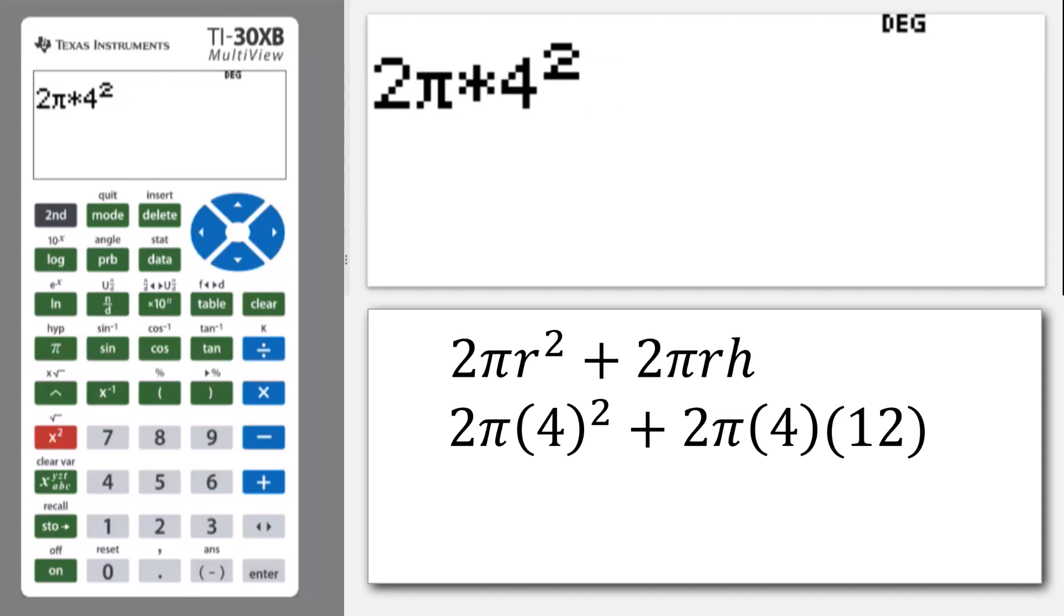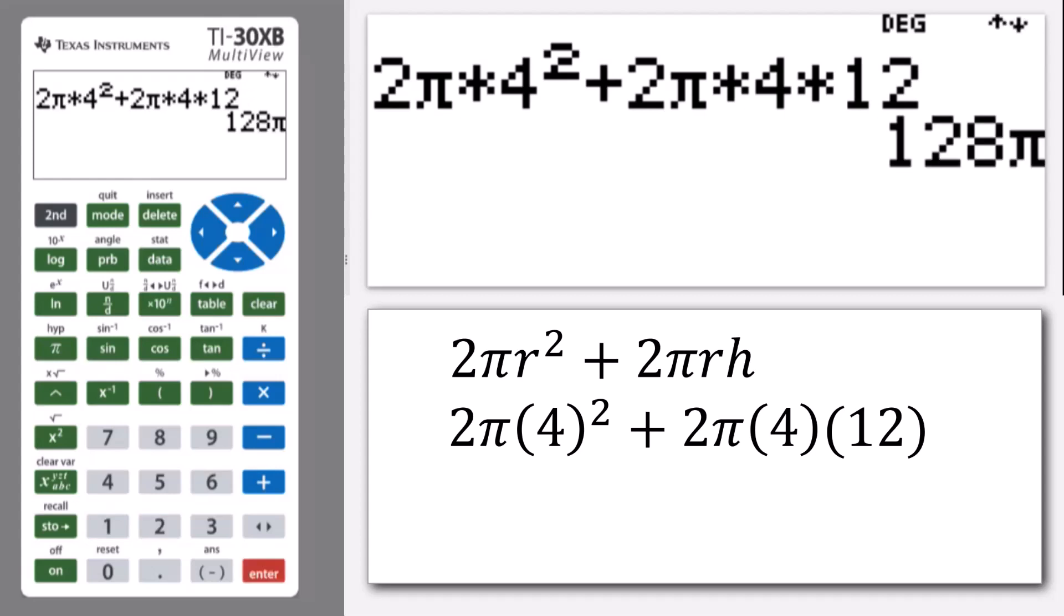So then I multiply that by 4 squared. So that's my 2πr² and I'm going to add on the curved surface area 2πrh. So once again 2π and then multiplied by, and the r was 4, and then we multiply by the height which was 12. And we press enter and it gives us an exact answer. So that's the advantage of using the π button is that we get this exact answer in terms of π. So 128π and that would be in centimeters squared.